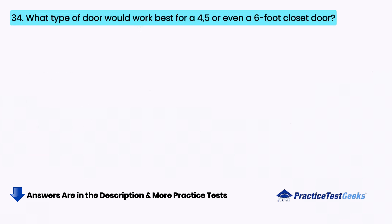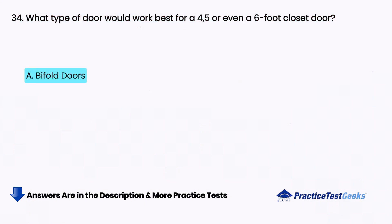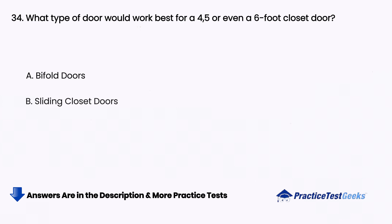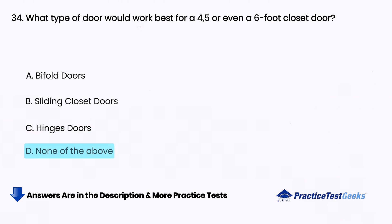What type of door would work best for a 4, 5, or even a 6-foot closet door? A. Bifold doors, B. Sliding closet doors, C. Hinged doors, D. None of the above.